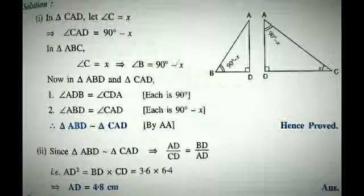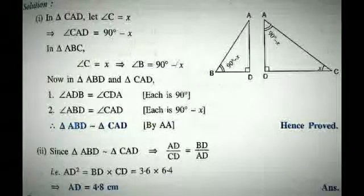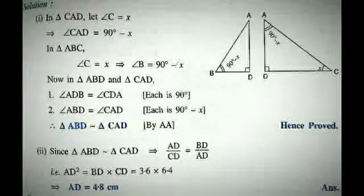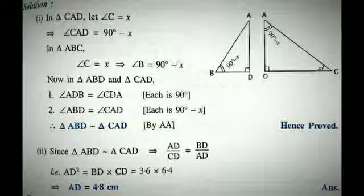Since the angles are equal, the sides opposite to equal angles are in proportion. Therefore, AD by CD equals BD by AD. That gives us AD squared equals BD times CD. Place the values of BD and CD to find AD: AD squared equals 3.6 times 6.4, so AD can be calculated from this.